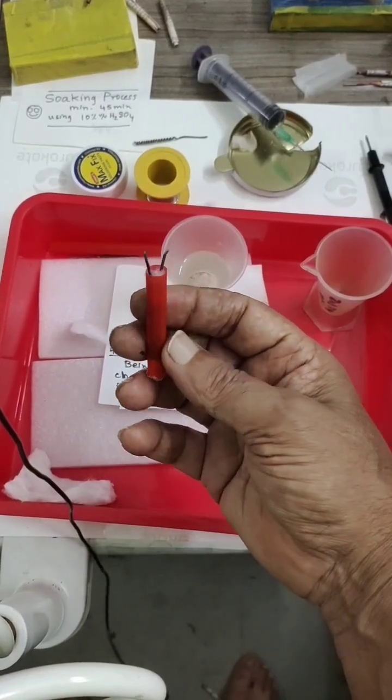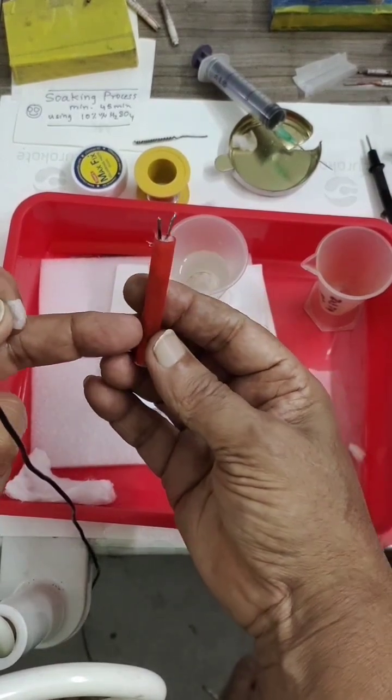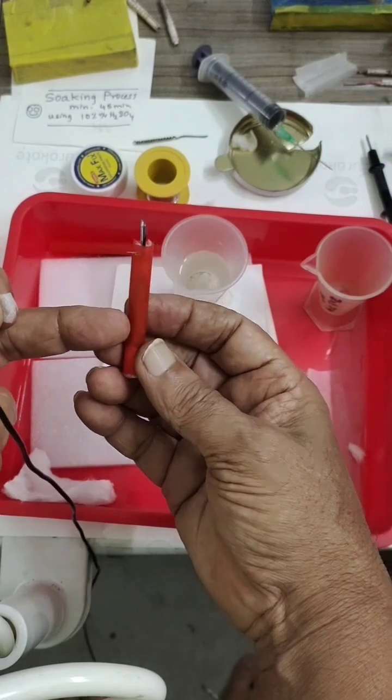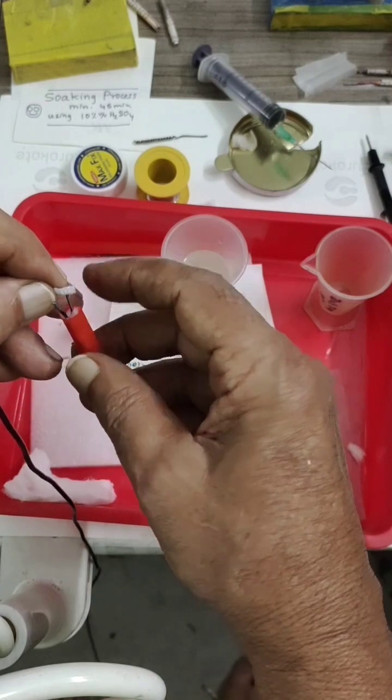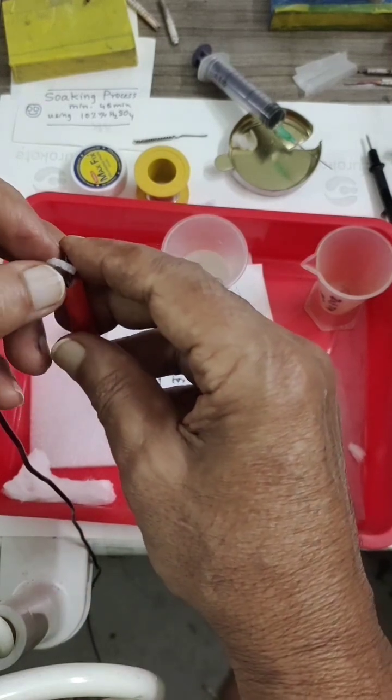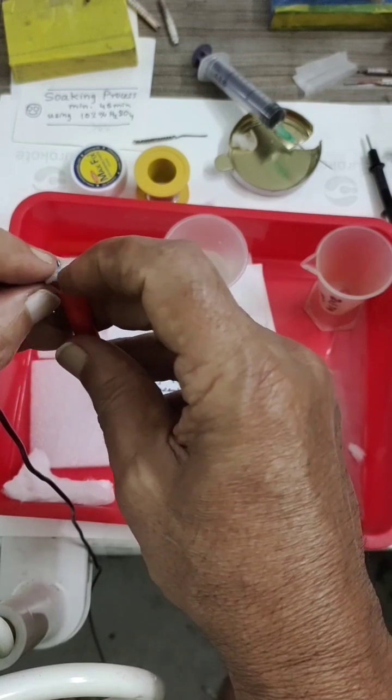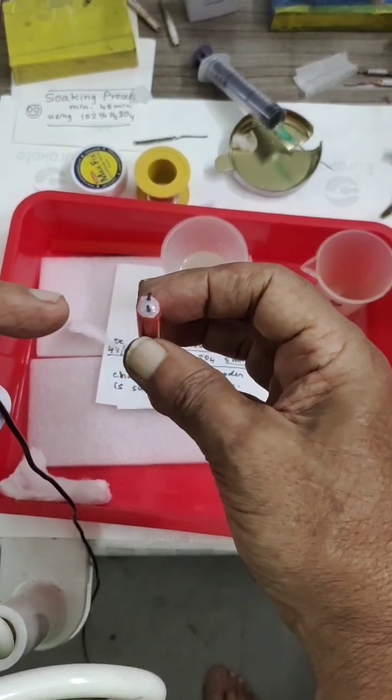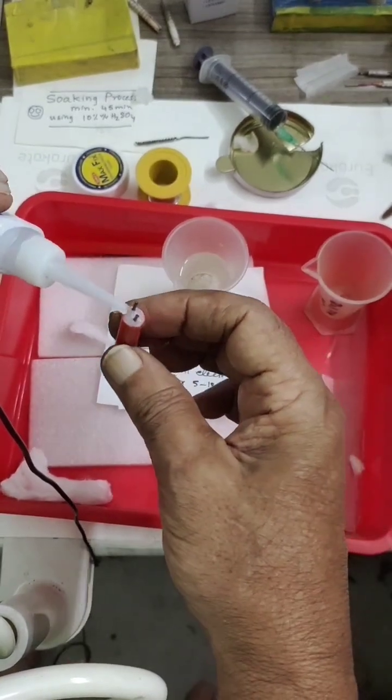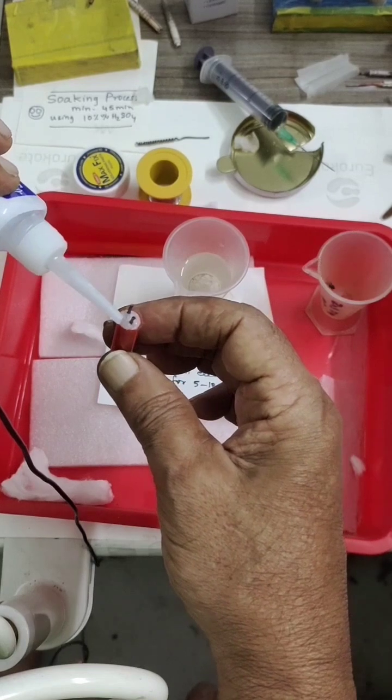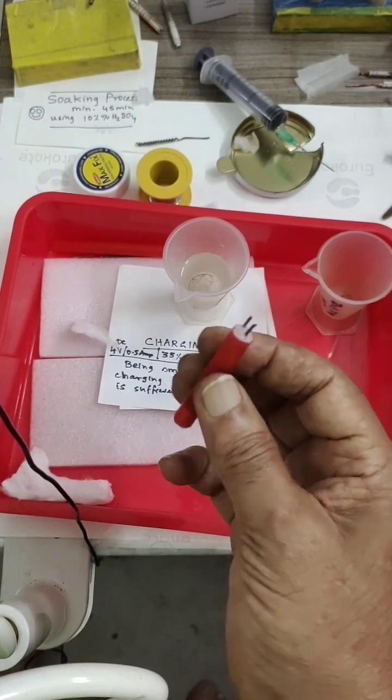Finally I have inserted carefully those two electrodes into this, and using an injection I have filled the electrolyte here. For neatness I am going to just put a cap. So after inserting the upper lid I am carefully applying this. Now the battery is ready.